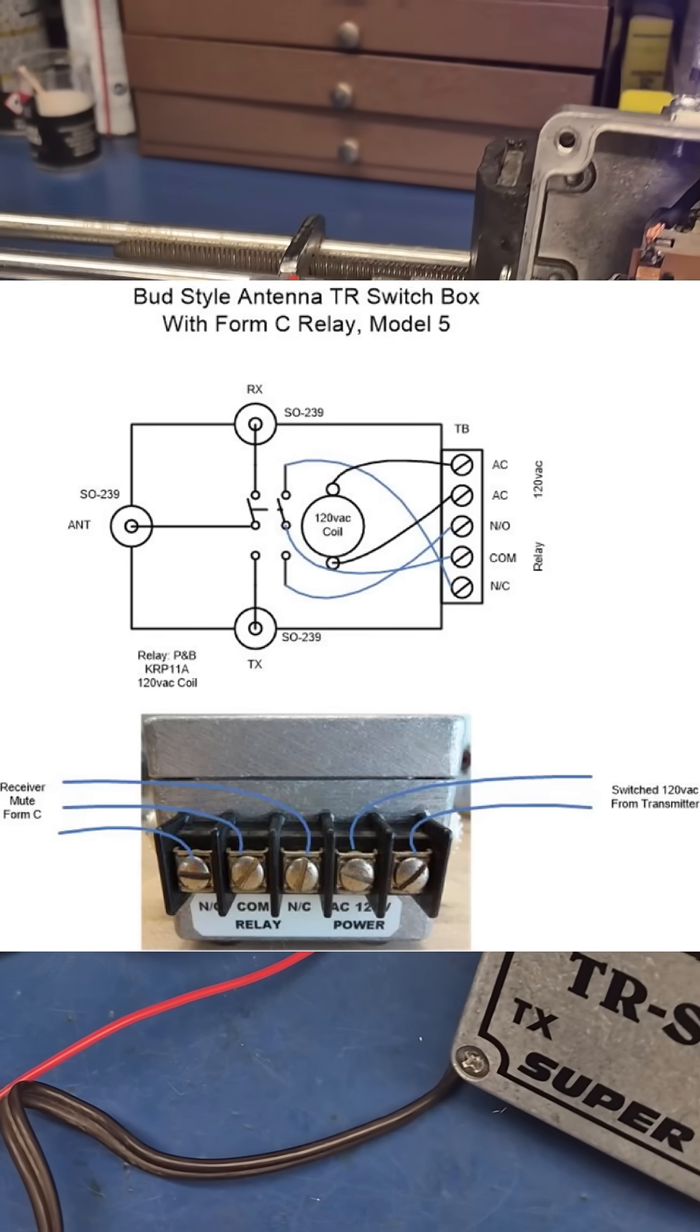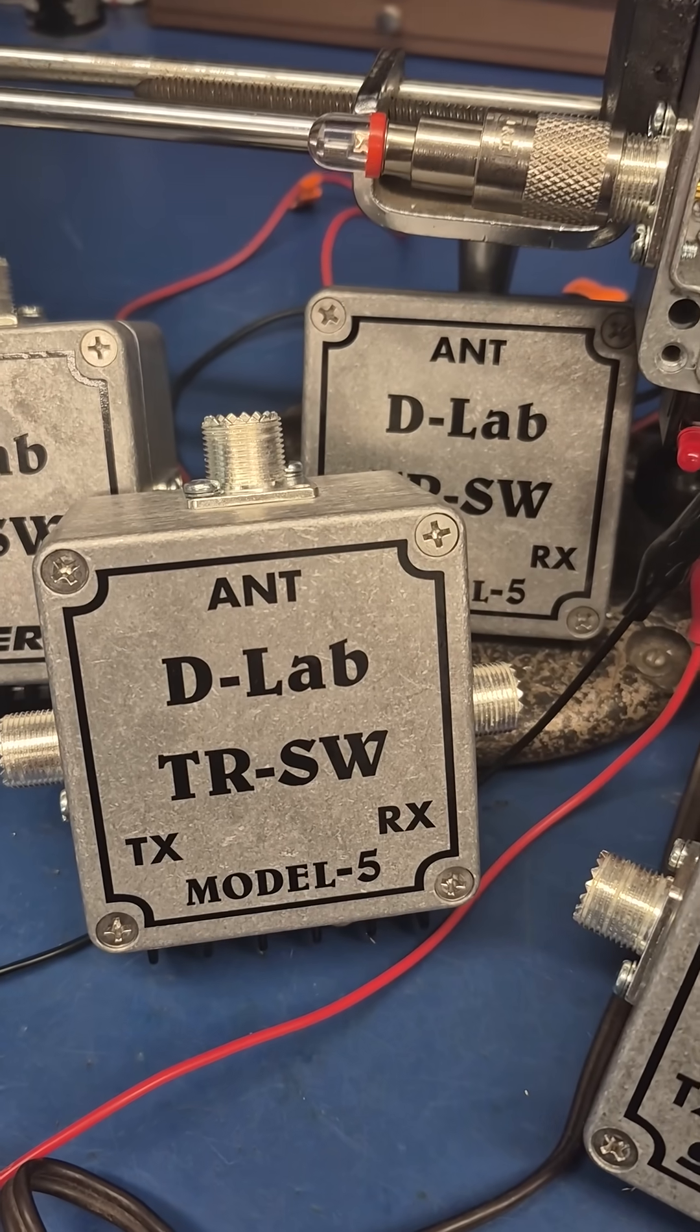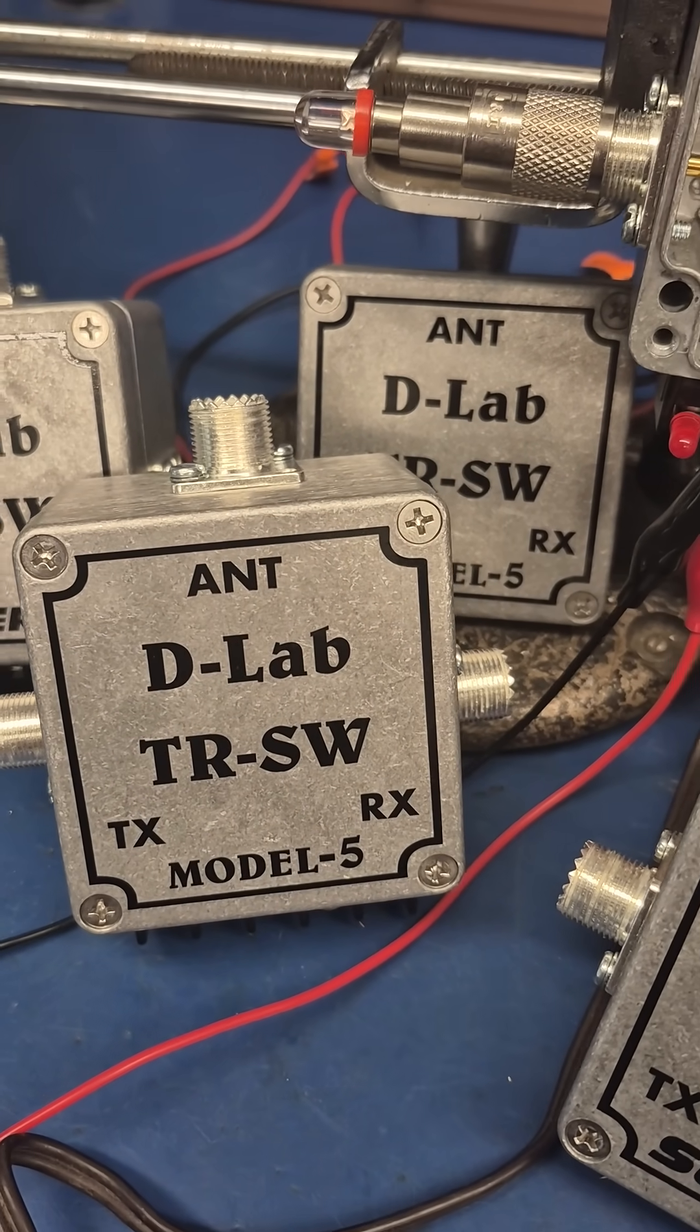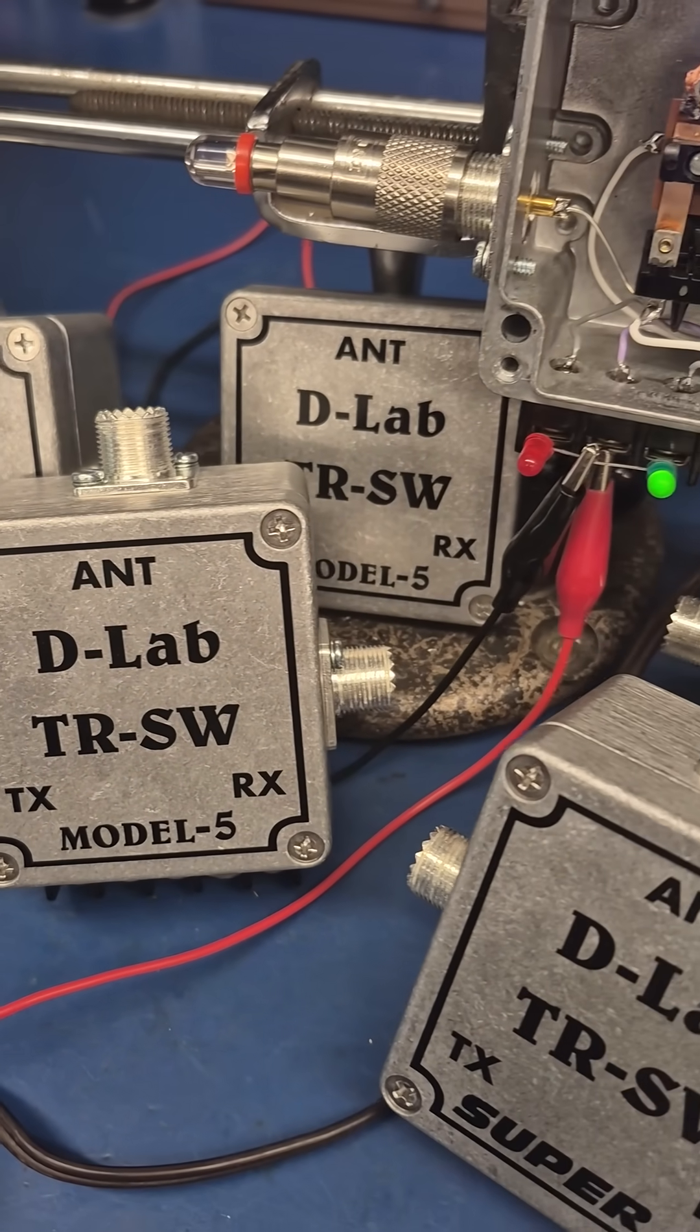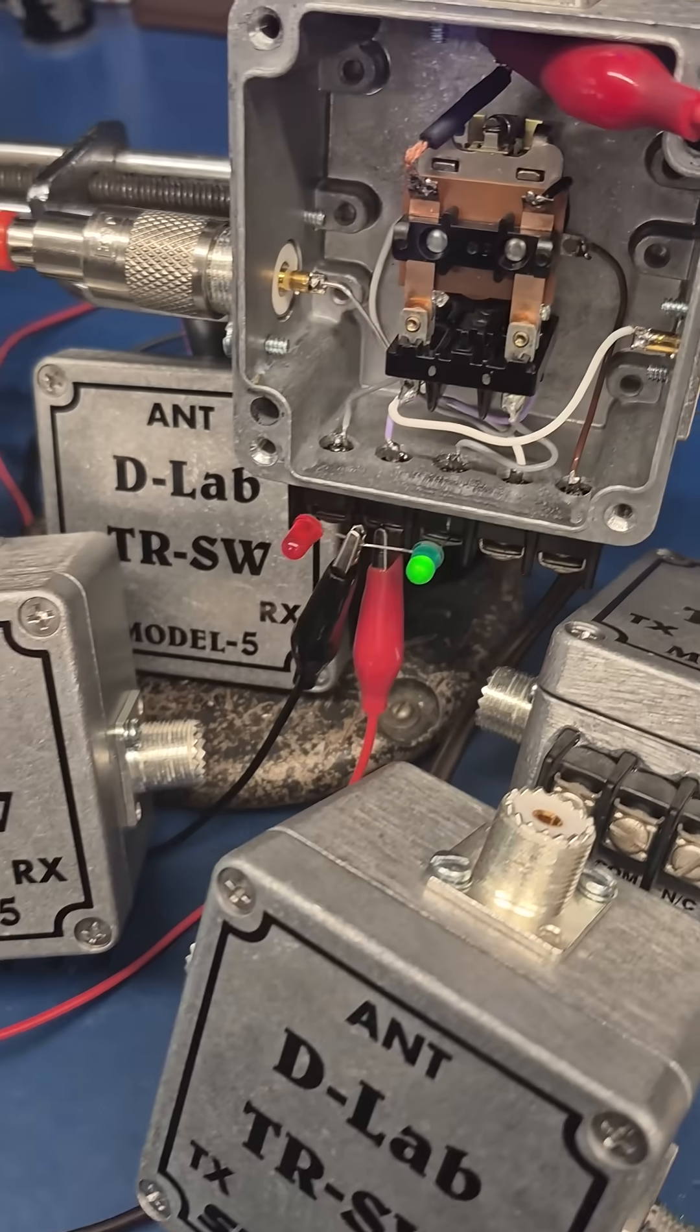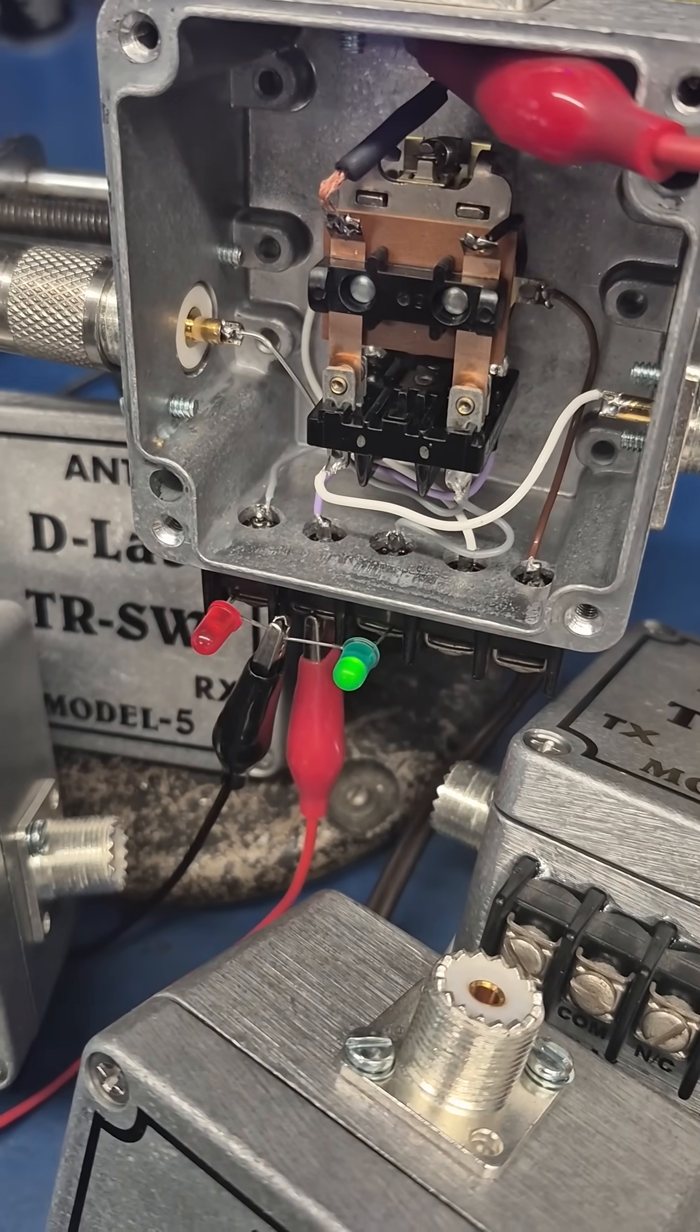Well this is D-Lab's replacement for the vintage Dow key relays. Operation is the same. These are built in die cast aluminum boxes and feature a Potter and Brumfield 10-amp relay.